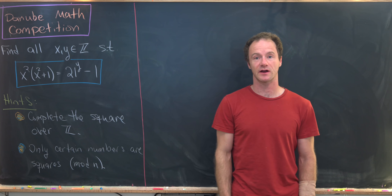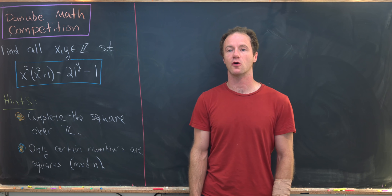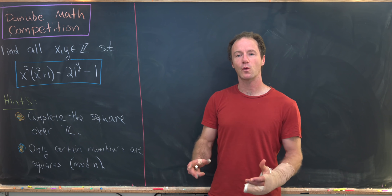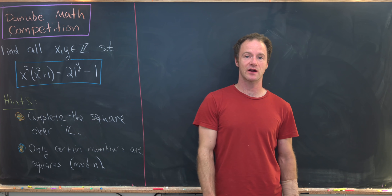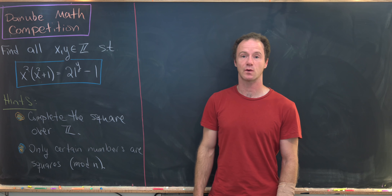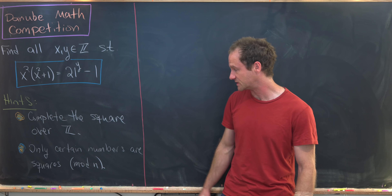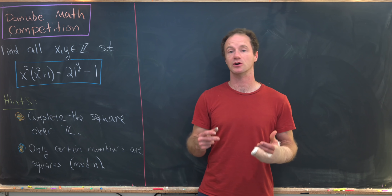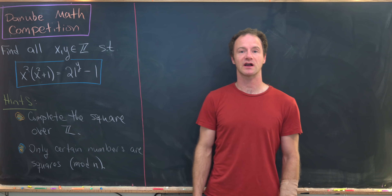There are two trickier hints. The first hint is that maybe we should be completing the square over the integers. We have a quartic polynomial, and the way it's written — not multiplied out, with the x squared term visible — gives a big hint that we should be thinking about putting a perfect square into this situation. Once you're doing that, you'll want to use the fact that only certain numbers are perfect squares modulo n, where we choose n depending on the problem.